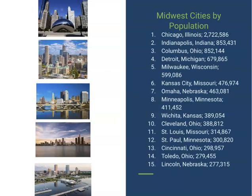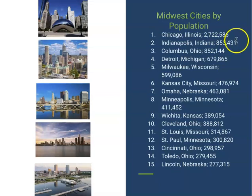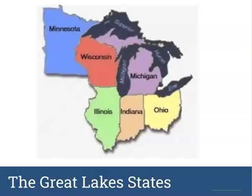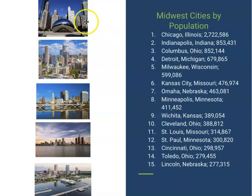These are the top 15 populated cities in the Midwest. Chicago is the most populated at almost 2.7 million. Then you've got Indianapolis, Columbus, Detroit, and Milwaukee rounding out the top five. Cincinnati is way down at number 13, at just about 300,000 people. There are also pictures of each of the top five cities: Chicago, Indianapolis, Columbus, Detroit, and Milwaukee.